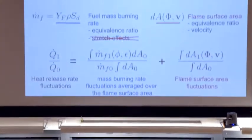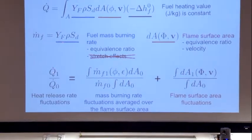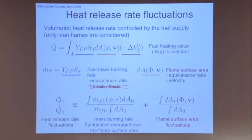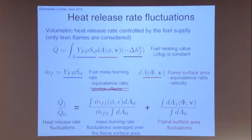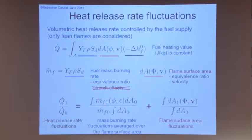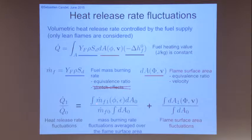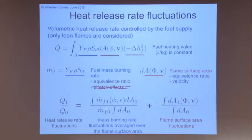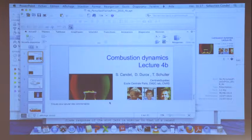Taking that expression, the heat release rate fluctuations will be caused by fluctuations in the mass flow rate of fuel and fluctuations in the flame surface area. This is linear, and as a consequence these two add up.